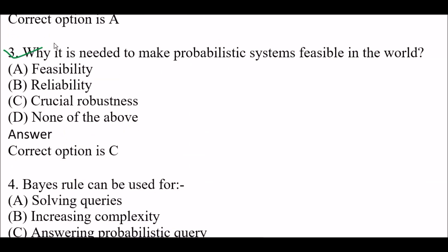Next question: Why is it needed to make a probabilistic system feasible in the world? Option A: Feasibility, Option B: Reliability, Option C: Crucial robustness, Option D: None of the above. Right answer is Option C — crucial robustness is needed to make a probabilistic system feasible in the world.